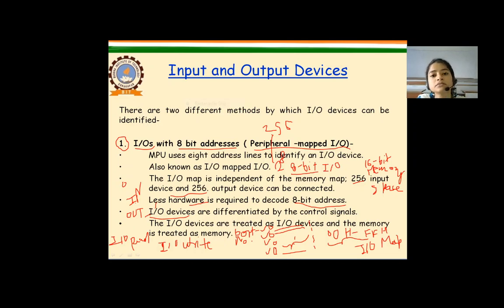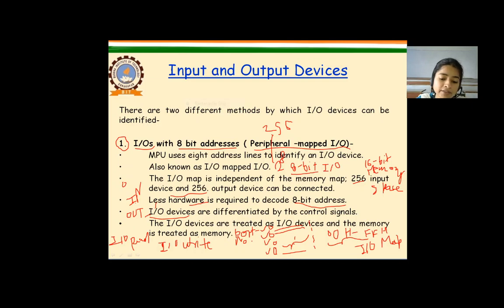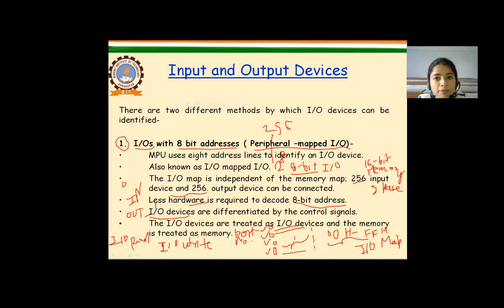The specific input or output device is enabled, then data can be transferred between the input-output device and the microprocessor with the help of the data bus.